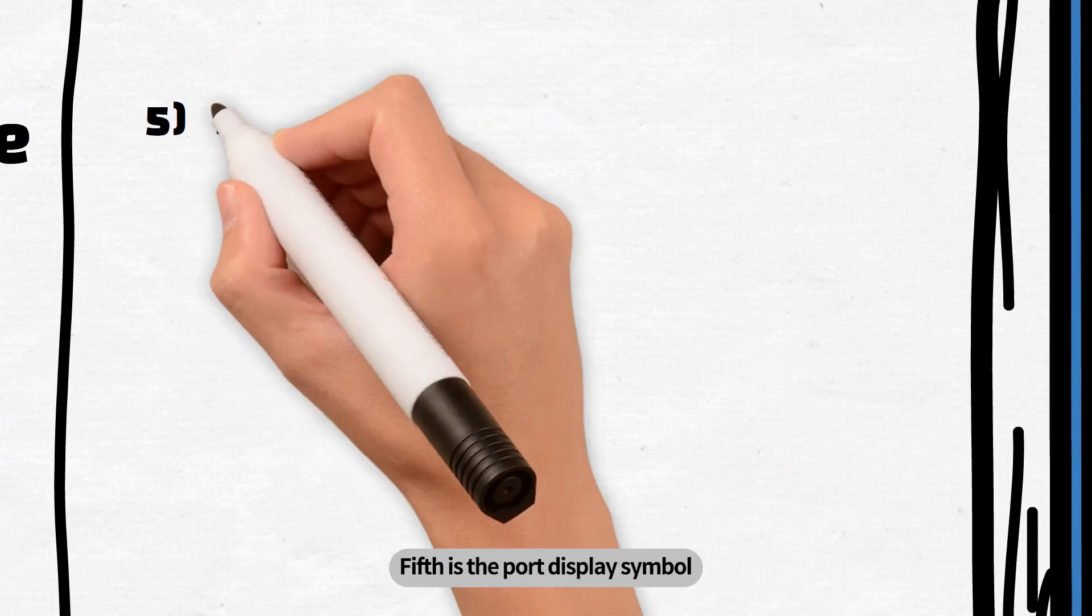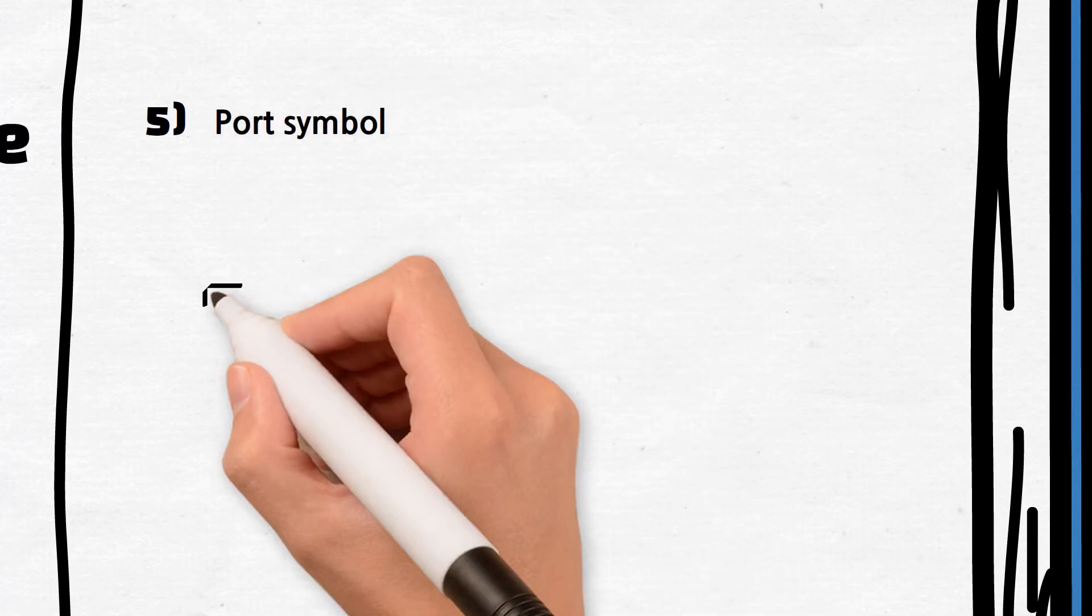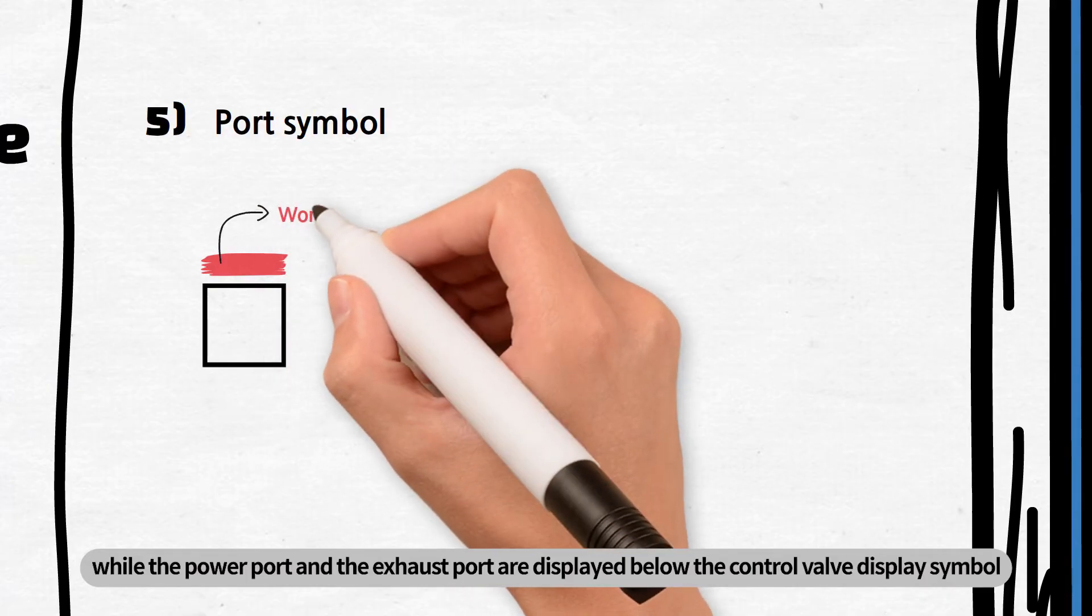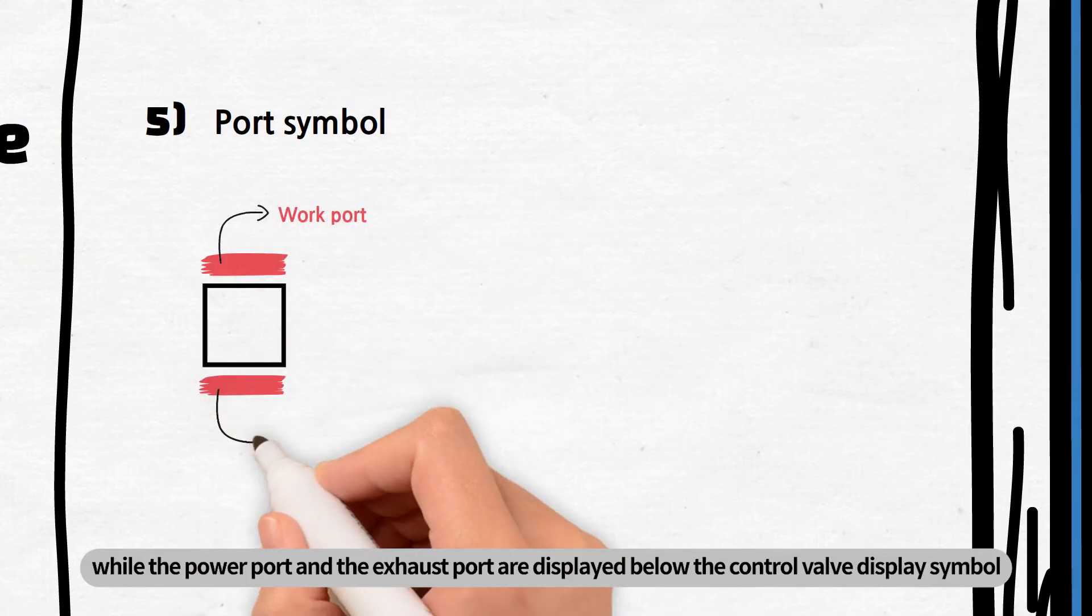Fifth is the port display symbol. The working port is drawn above the square, while the power port and the exhaust port are displayed below the control valve display symbol.